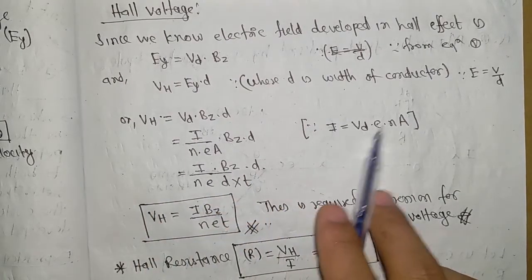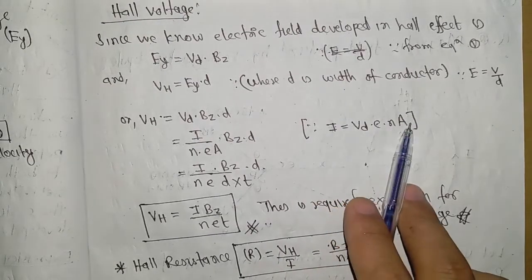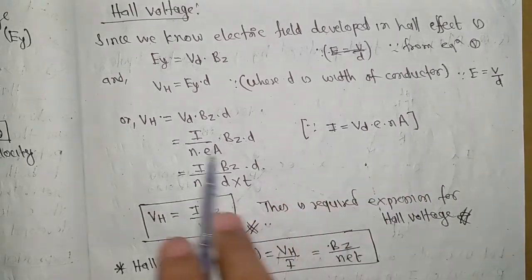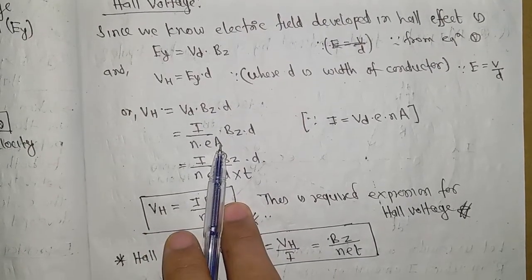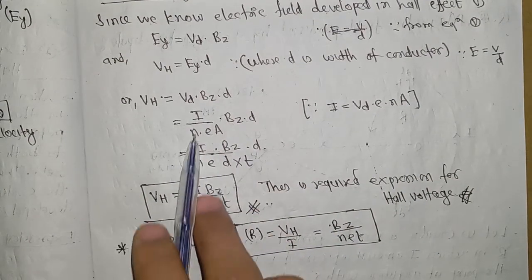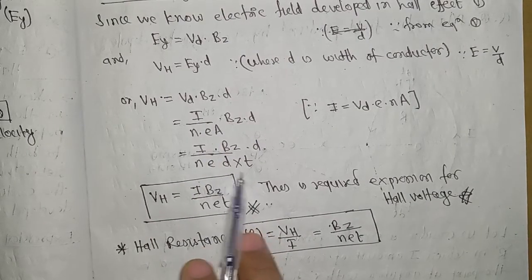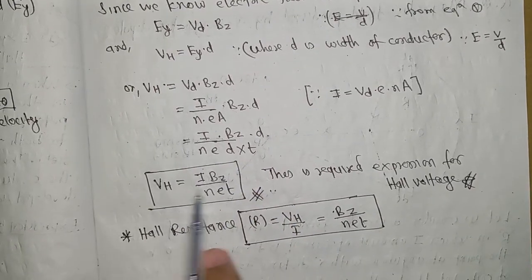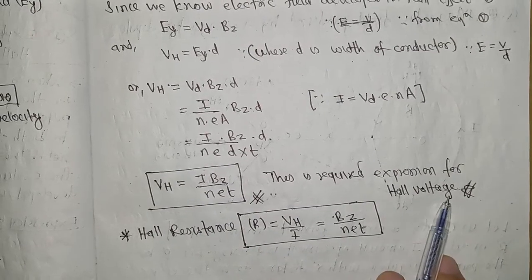We know current I = nεAVD, where A is area. So VD = I/(nεA). The area A = d·t, where d is width and t is thickness. Substituting this, VH = (I·Bz·d)/(nε·d·t) = (I·Bz)/(nε·t). This is the expression for Hall voltage.